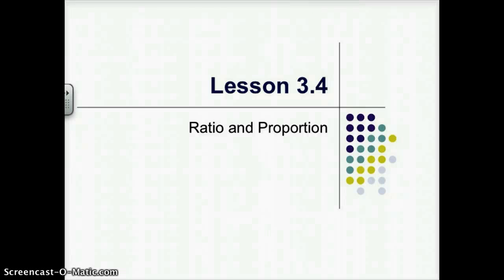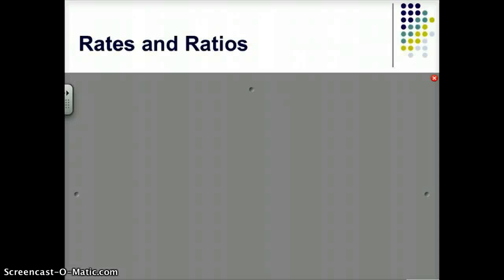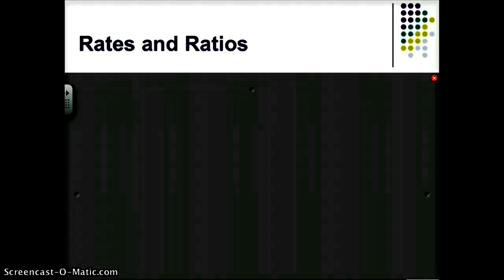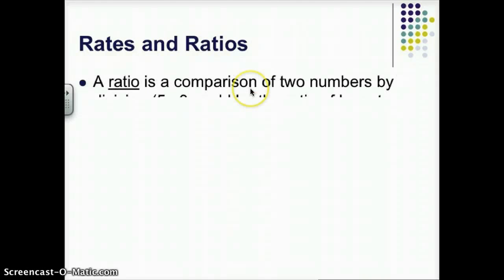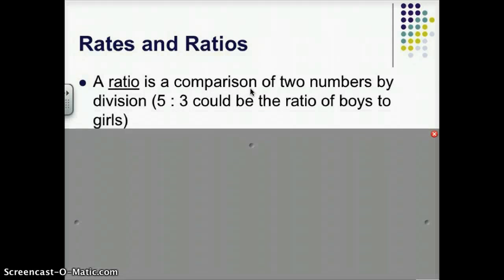Okay, today we're moving on from straightforward equations to talk about ratio and proportion. So let's start with some vocab. Rates and ratios - you spent a lot of time in comparing and scaling last year working with these. A ratio is just a comparison of two numbers by division. So a lot of times we say 5 to 3 could be the ratio of boys to girls.